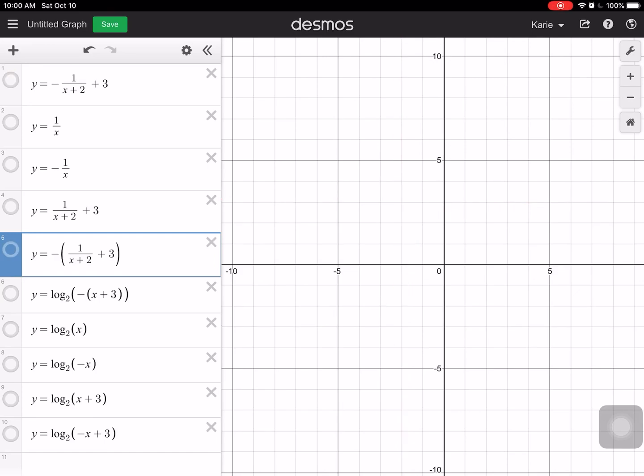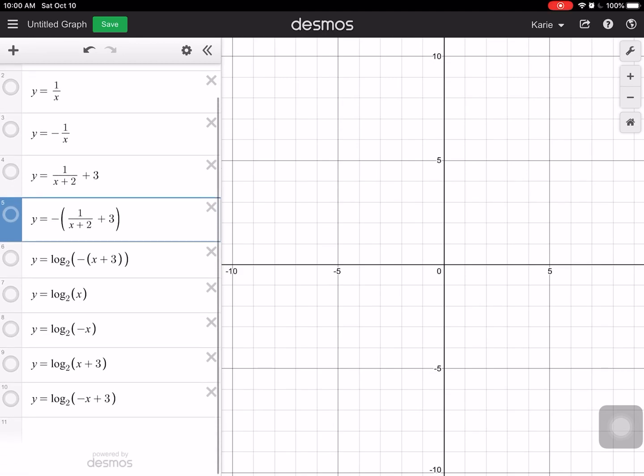The goal is to get to this. Okay, so if you base it off of what you recognize, the parent function is this log base two of x, and then it's had a reflection over the y-axis in this time, and then it shifted to the left three.